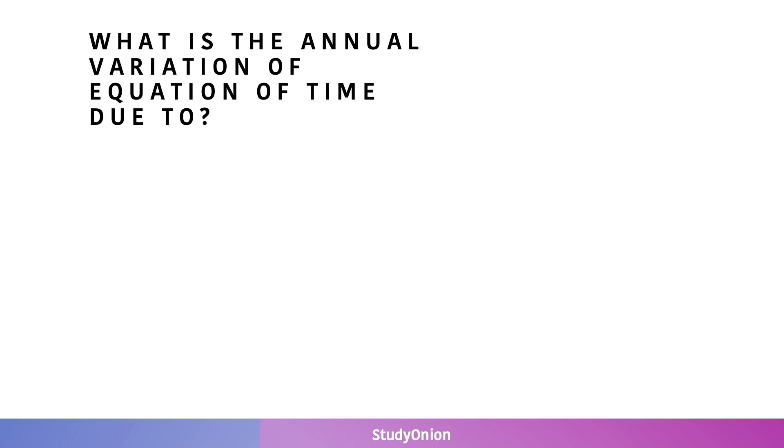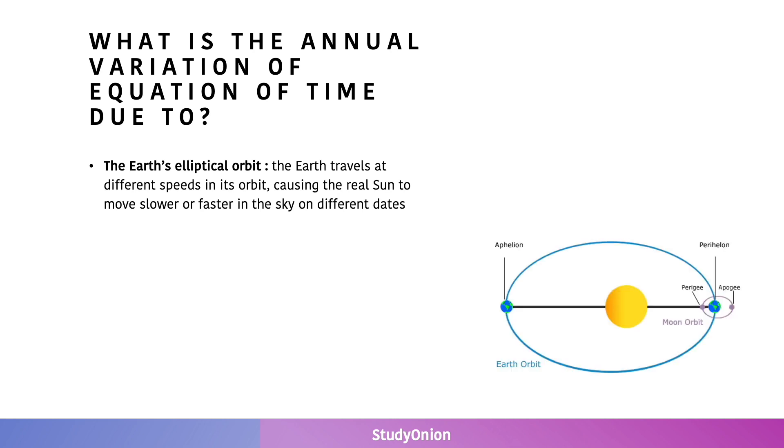But why do we get this annual variation in the equation of time? This is basically due to two things. The first is the Earth's elliptical orbit. The Earth travels at different speeds in its orbit, which causes the real sun to move slower or faster on different days. When it goes around the sun, it has an elliptical orbit. And we can see this in that image, where at certain times it moves slower or faster in its orbit, which means it looks like the apparent motion of the sun is traveling faster or slower.